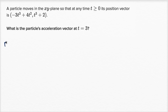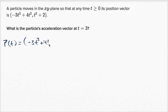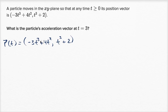Our position is a vector-valued function of time. The x component is negative three t to the third power plus four t squared, and the y component is t to the third power plus two. Given any time greater than or equal to zero, we can find the corresponding x and y components. This is one form of notation for a vector.